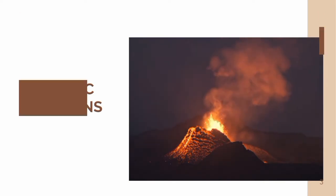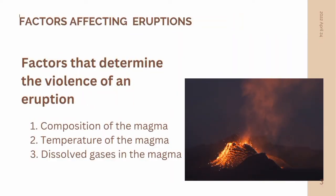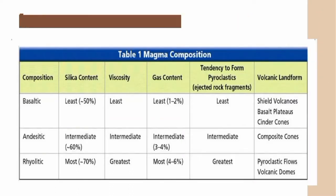There are factors affecting volcanic eruptions that determine the violence of an eruption. First is the composition of the magma, second is the temperature of the magma, and third is the dissolved gases in the magma. These three factors control the viscosity of a given magma, which in turn controls the nature of an eruption. Viscosity is a measure of a material's resistance to flow, and the factors affecting viscosity are temperature and silica content.